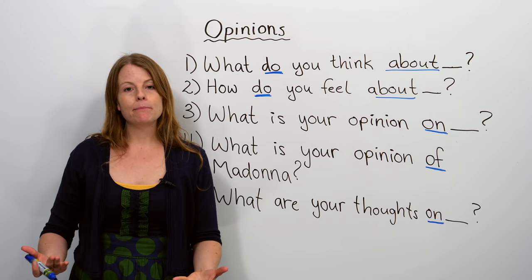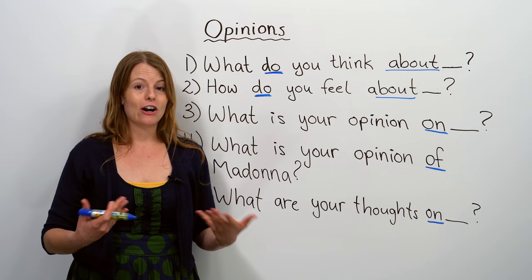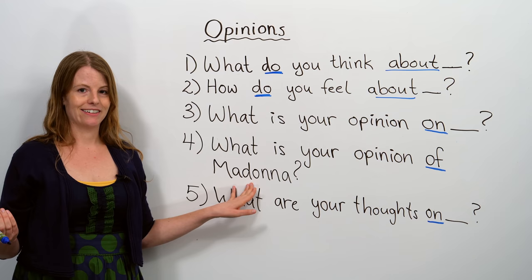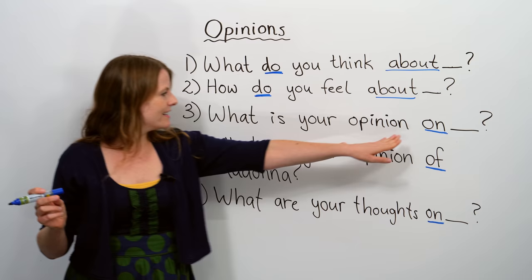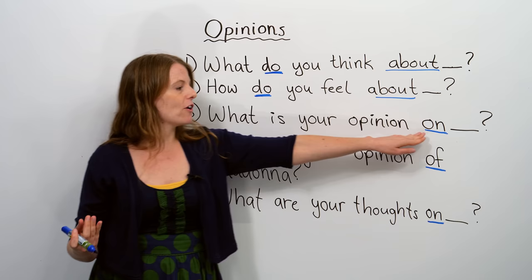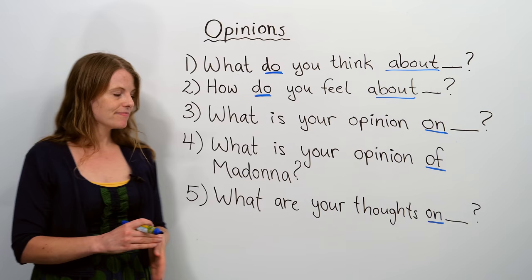Another thing we can ask is people's opinions on a specific person. Sometimes, maybe we're talking about a celebrity or somebody famous. We can ask our friends their opinions about that person. We can say: what is your opinion of Madonna? Notice numbers three and four are a little bit different — we have the word on for a topic, and the word of when we're asking someone's opinion of a person. What is your opinion of him? What is your opinion of the president, for example?